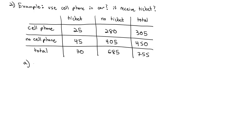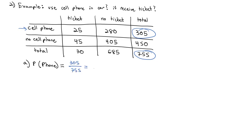Our first question is: what's the probability that a randomly chosen person from the study used their cell phone in the car? We see the total number of cell phone users is 305, and the total number of people in the study was 755. So we take 305 divided by 755 to get a probability of 0.4040.